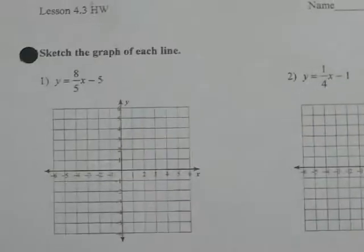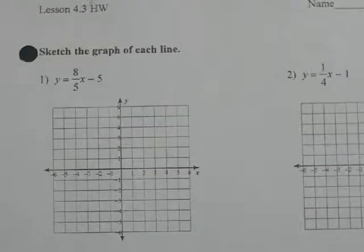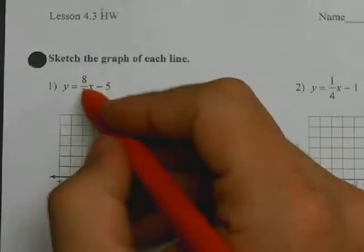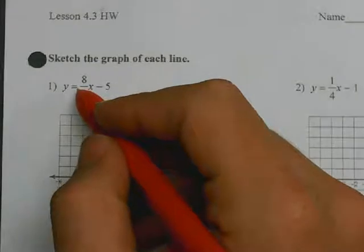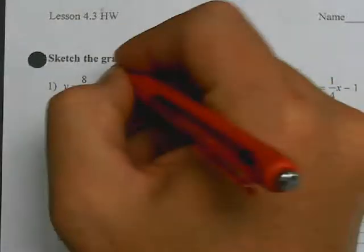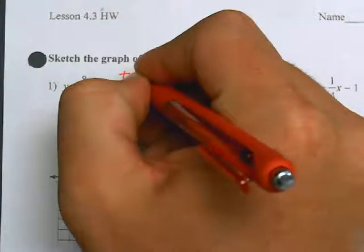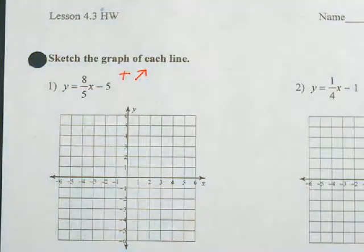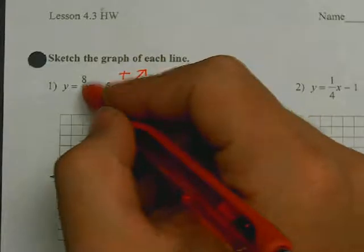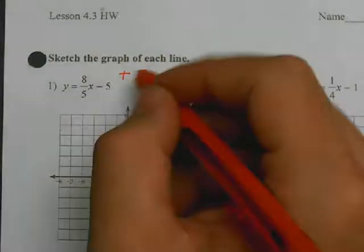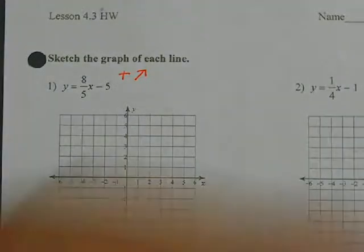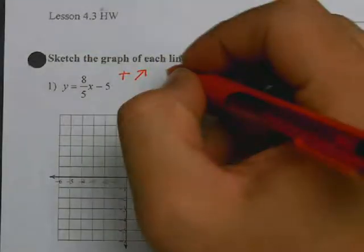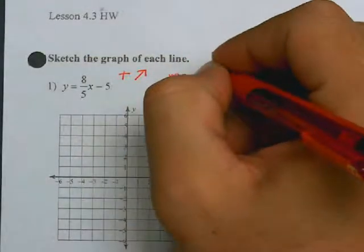Number one is y equals 8 fifths x minus 5. First step is to determine if this number is positive or negative. This number is positive, so we're going to say it's positive, which means a line going up from left to right. Second step, write m as a fraction. Well, m is currently a fraction because it's 8 over 5, so I'm just going to keep it as m equals 8 over 5.